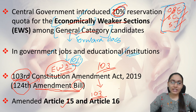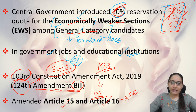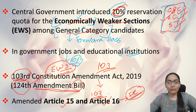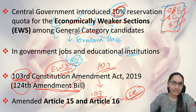Under the 103rd Constitutional Amendment Act, Article 15 and Article 16 of the constitution — which are included under the fundamental rights — have been changed.